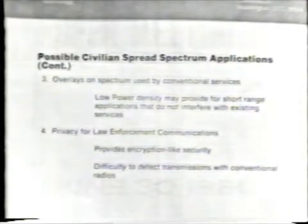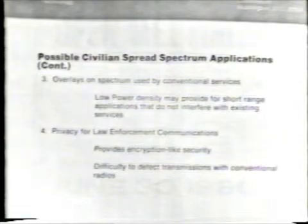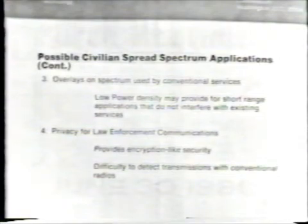Spread spectrum might be used as overlays on spectrum used by conventional services. The low power density aspect of spread spectrum would allow it to share the same spectrum in cases of short range communications. One area we've been exploring is the cordless phone area, which is intrinsically a short range communication service. Finally, it might be useful for privacy for law enforcement communications, providing both encryption-like security and transmissions that are difficult to detect with conventional radios. We note that federal law enforcement agencies are already allowed under IRAC authorization this type of technology, although non-federal law enforcement agencies are implicitly forbidden.